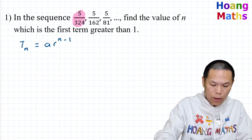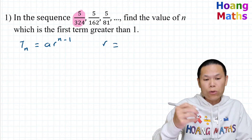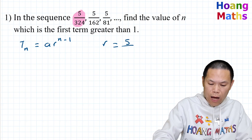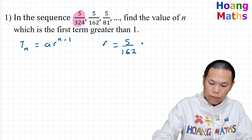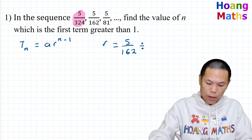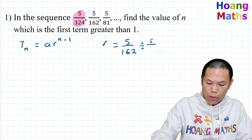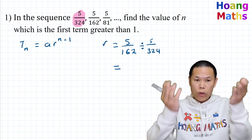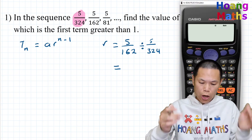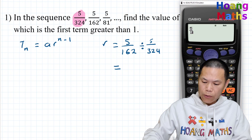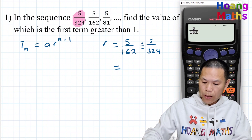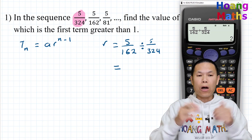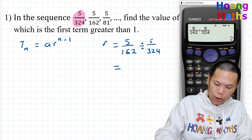So let me work this out. r is equal to term two divided by term one, so that is (5/162) divided by (5/324). Putting that on a calculator: 5 over 162 divided by 5 over 324. The common ratio r is 2.